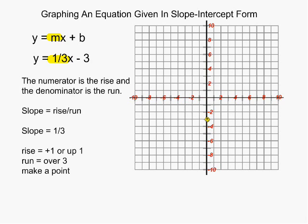So from our smiley face, we are going to go up 1 and then we are going to go over 3 and then we are going to make a new point. And then we can go up 1 again, over 3 again, and then make a new point.